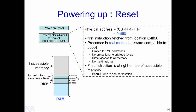In order to boot the system, there must be a valid instruction at this memory location. This is the first instruction that executes. Also, as soon as power is reset, the processor is set to what is known as real mode — a backward compatibility mode with the 8088 or 8086. In real mode, the processor can address at most 1 MB. Other features of real mode include: no protection, no privilege levels, direct access to all memory, and no multitasking.